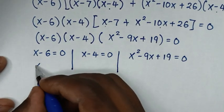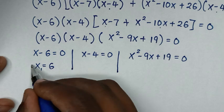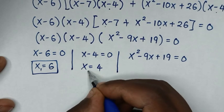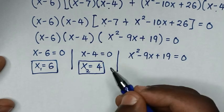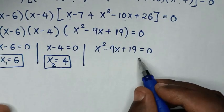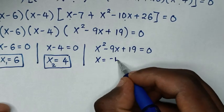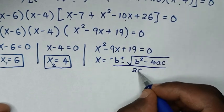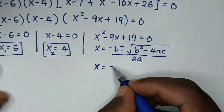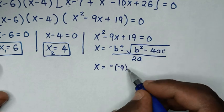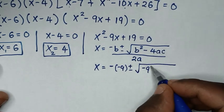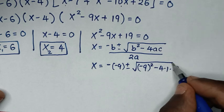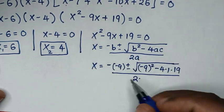From the first solution, x equals 6. This is the first value of x. From the second solution, x equals 4. This is the second value of x. For the third solution — the quadratic equation — we use the quadratic formula: x equals negative b plus or minus square root of b squared minus 4ac, all over 2a.